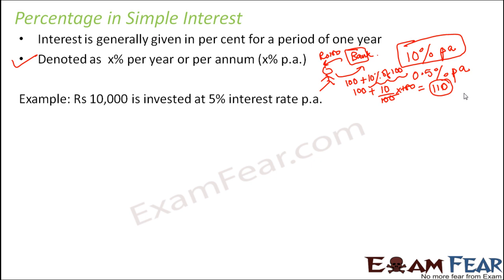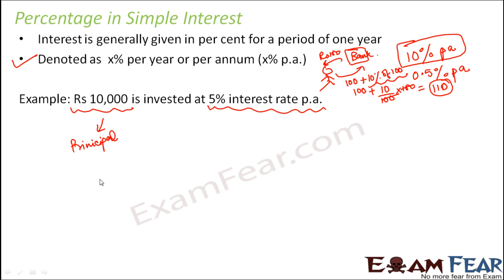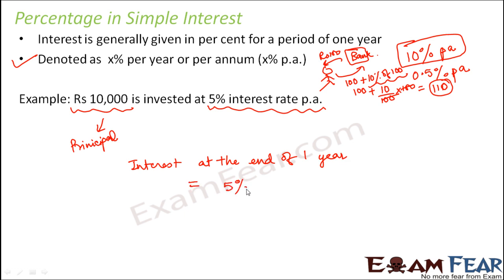Let's take another example. Rupees 10,000 is invested by the bank at 5% interest rate per annum. Invested means the bank lent that money to someone like us who is borrowing from the bank. So rupees 10,000 is the principal — the money given by the bank. The 5% interest rate per annum is the percentage of interest you have to pay to the bank every year. The interest at the end of one year equals 5% of the principal, that is 5% of rupees 10,000.